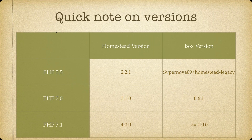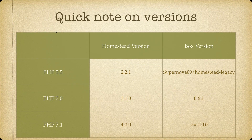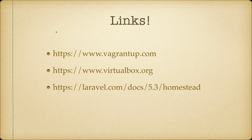A quick note on Homestead versions. If you're not ready for PHP 7.1 yet, that's fine. If you still need PHP 5.5, use Homestead repo version 2.2.1. Note there's a bug with MySQL in the standard box for that version — use the fixed box 'supernova09/homestead-legacy' instead of the standard Laravel Homestead box. For PHP 7, check out repo version 3.1.0 and use box version 0.6.1 or higher. For the latest PHP 7.1, check out version 4.0 and use a box version greater than 1.0.